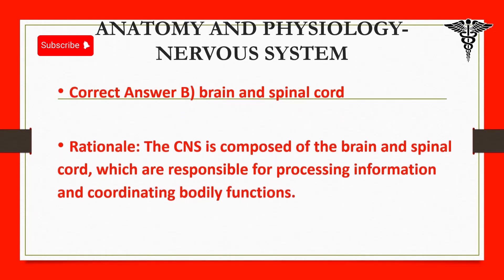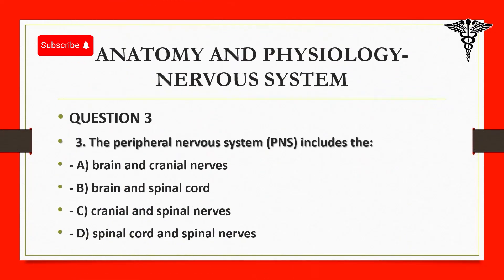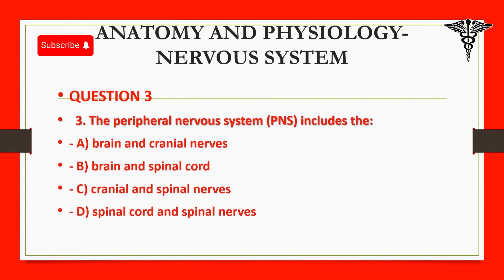Question 3: The peripheral nervous system (PNS) includes the: A. Brain and cranial nerves. B. Brain and spinal cord. C. Cranial and spinal nerves. D. Spinal cord and spinal nerves.